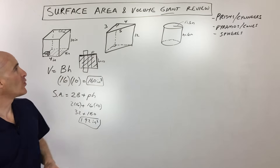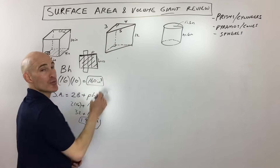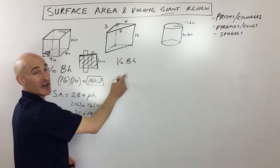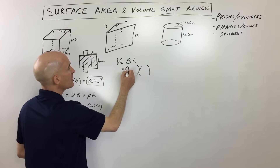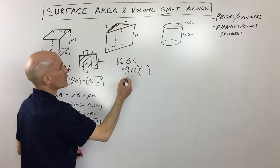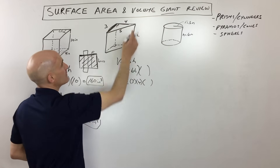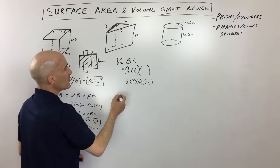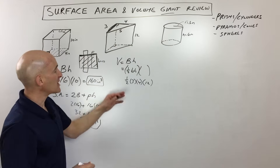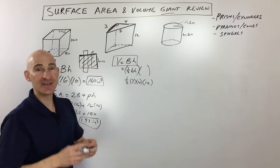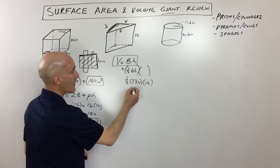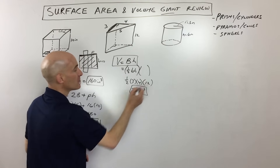Now let's try a triangular prism — the top and bottom are triangles separated by a height of 12. For the volume, it's still the area of the base times the height. Since the base is a triangle, that's ½ × base × height. So ½ × 3 × 4 × 12. The triangle base is 3, triangle height is 4, overall height is 12. So 3 × 4 = 12, times 12 = 144, half of that is 72 units cubed.